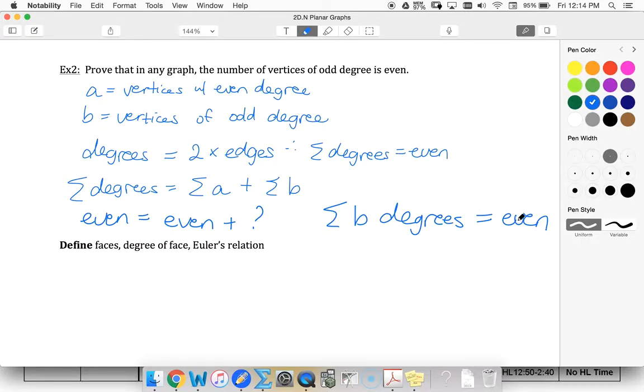To end up being even, I must have an even number of odd values in order to end up with an even sum.